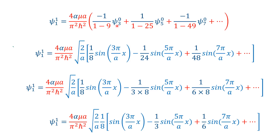Now we come to the wave functions. At m=3 the wave function is sin(3*pi*x/a), at m=5 it is sin(5*pi*x/a), and at m=7 it is sin(7*pi*x/a). We can rewrite the denominators: 8 = 1*8, 24 = 3*8, 48 = 6*8, so we can factor out 1/8. Also remember the normalization constant is sqrt(2/a), so we must include that factor.